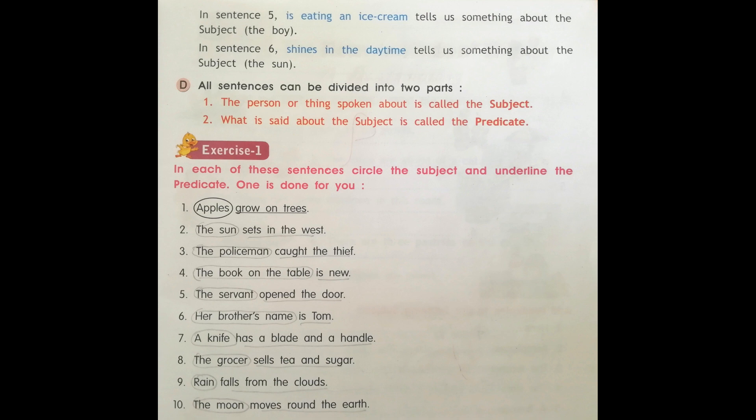Number ten: The moon moves round the earth. The moon is the subject. Moves round the earth is the predicate.